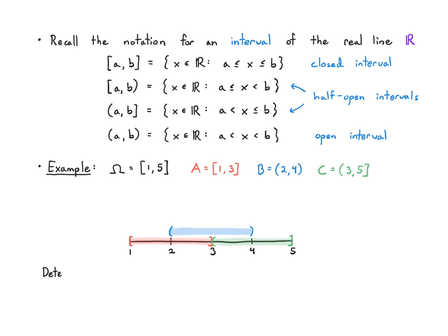Taking the complement of A: I can't include any part of A, so I start right after 3 — because A includes 3 — and go all the way to 5. That is actually the same thing as C. For the intersection of A and B: A starts at 1, B starts right after 2, so we start right after 2. A ends at 3 and B ends at 4, so we end right at 3. The intersection is the interval (2, 3].